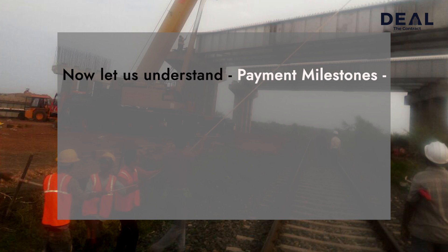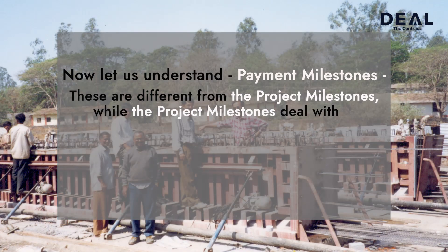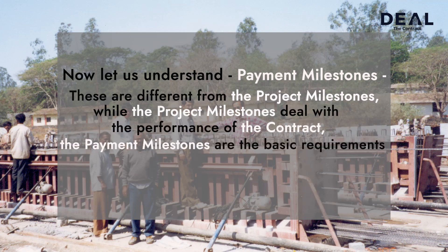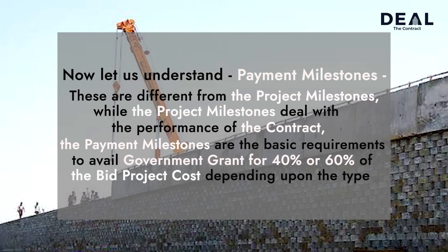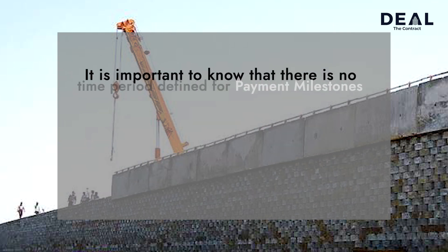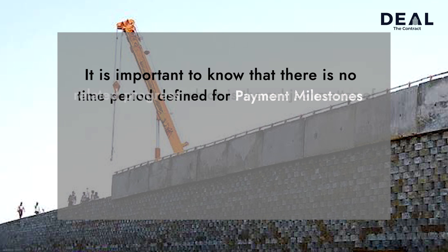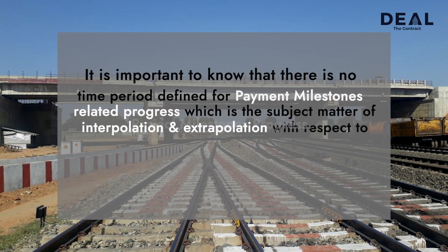Now let us understand payment milestones. These are different from project milestones. While project milestones deal with the performance of the contract, payment milestones are the basic requirement to avail government grant — 40% or 60% of the bid project cost depending upon whether it is a state or central government project. It is important to know that there is no time period defined for payment milestone-related progress, which is the subject matter of interpolation and extrapolation with respect to project milestone progress.